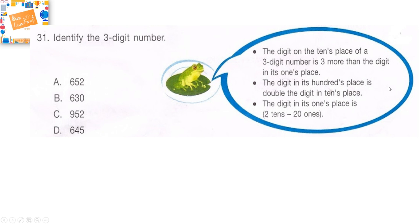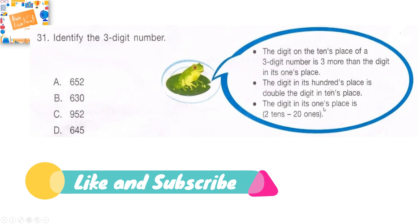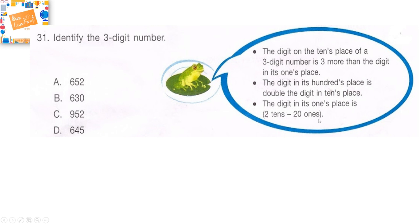The clues for the three-digit number are: the digit on the tens place is three more than the digit in its ones place; the digit in its hundreds place is double the digit in its tens place; and the digit in its ones place is two tens minus twenty ones. Your time starts now.